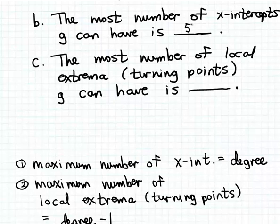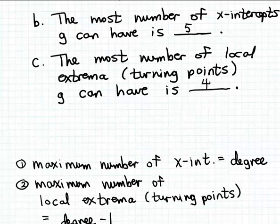Now, this doesn't mean that g has to have 5 x-intercepts. All this tells us is that 5 is the maximum number of x-intercepts that the polynomial function g can have. And likewise, the most number of turning points — the most number of local extrema that the graph of g can have — is 1 less than the degree, so that would be 4. Again, this doesn't mean the graph of g will have 4 turning points, but that's the maximum number it can have.